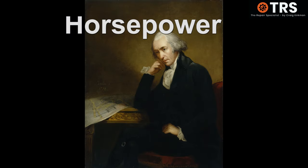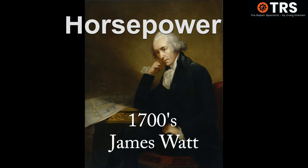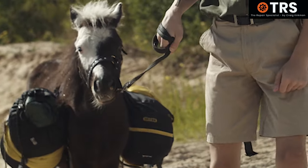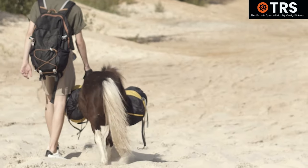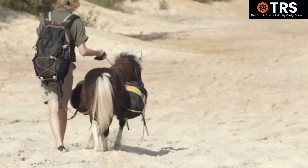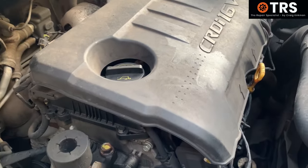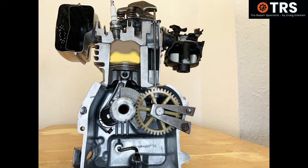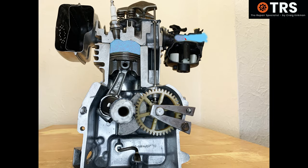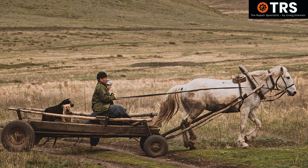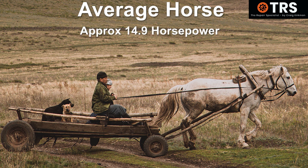Horsepower was termed by the inventor James Watt in the 1700s. Back then, Watt observed working ponies and calculated how much power they produced, or work done, in one minute. Without going too far into that history, there's a common misconception that one horsepower of an engine equals the maximum power produced by a horse. But this isn't quite the case — in fact, the average horse can produce more like 15 horsepower.